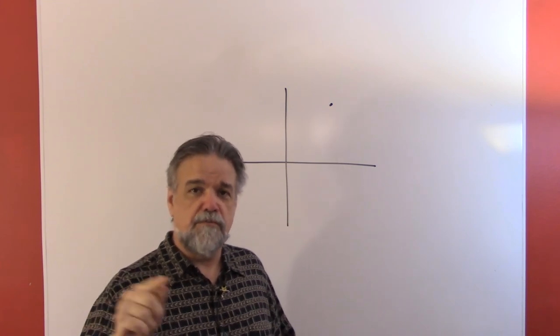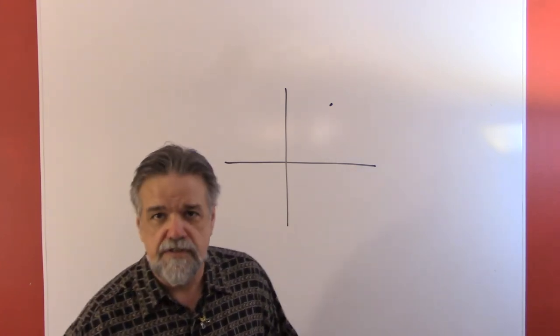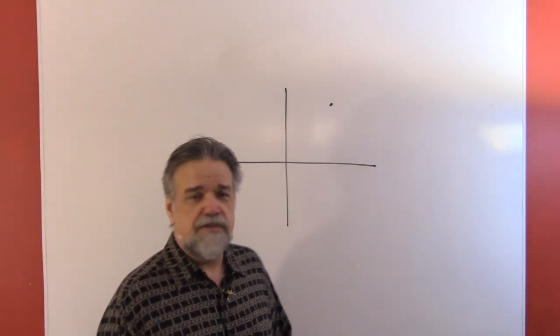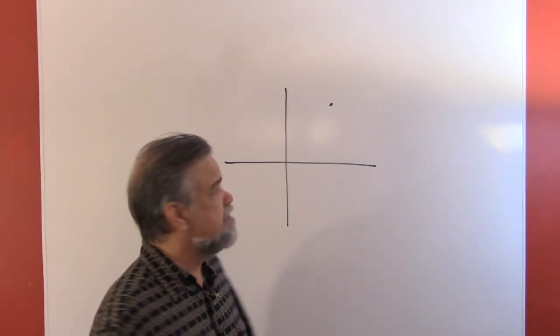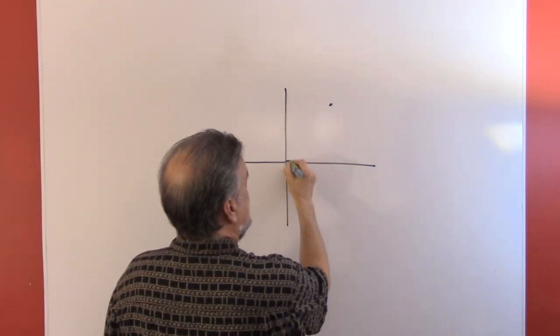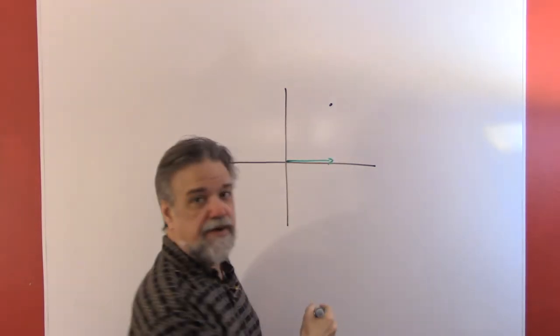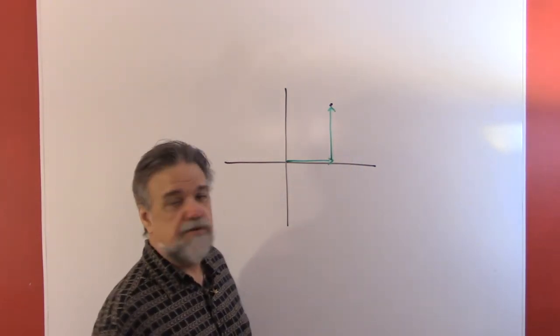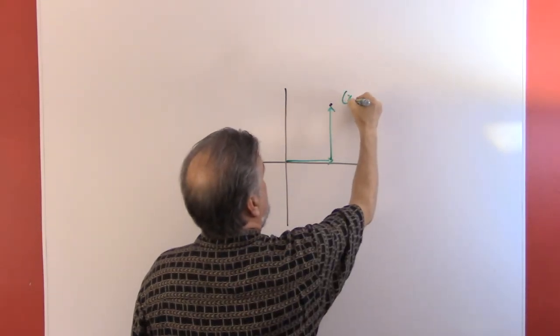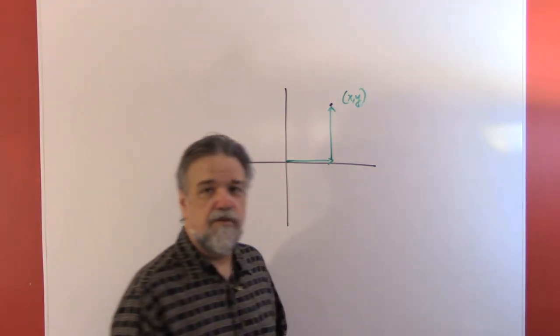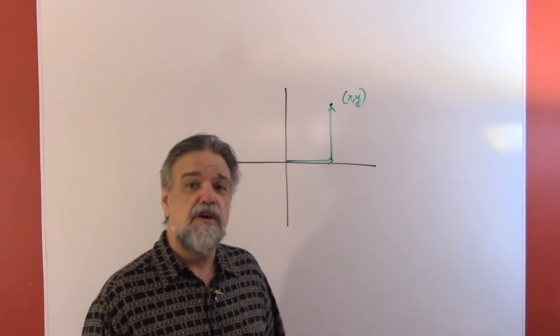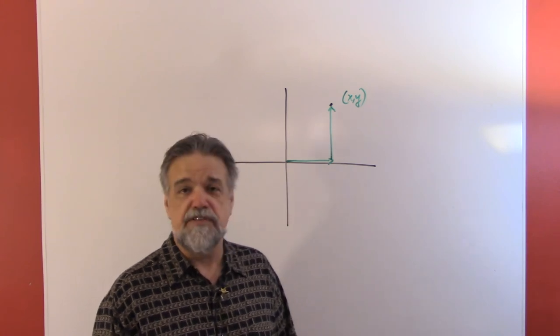You can use rectangular or Cartesian coordinates, or you can use polar coordinates. The difference is, with Cartesian coordinates, you say how far over do I go—that's x—and then how far up do I go—that's y—to get to your point, and then you label it (x, y). We're all familiar with that; we've been doing that for years.